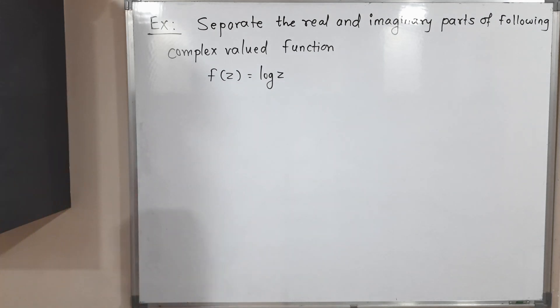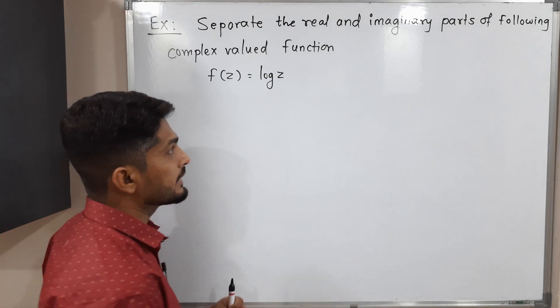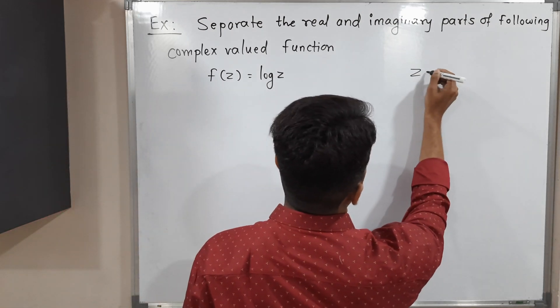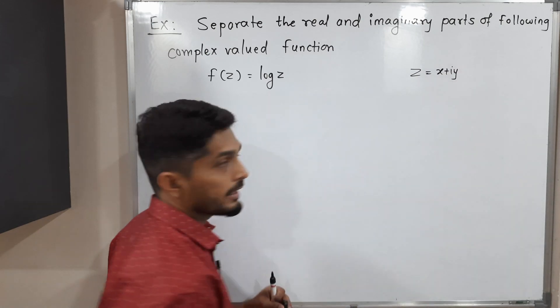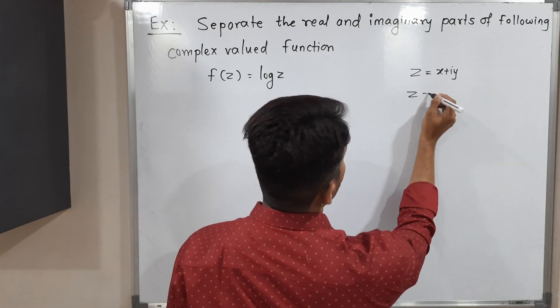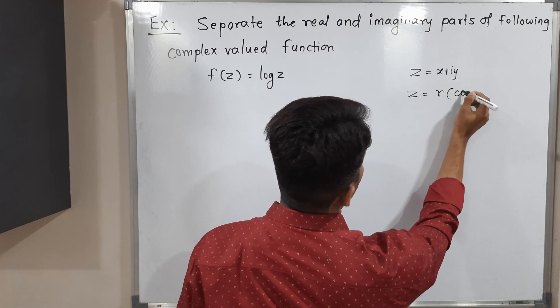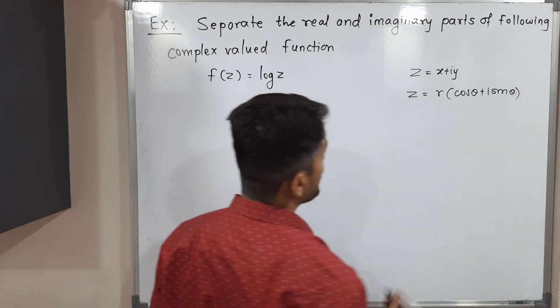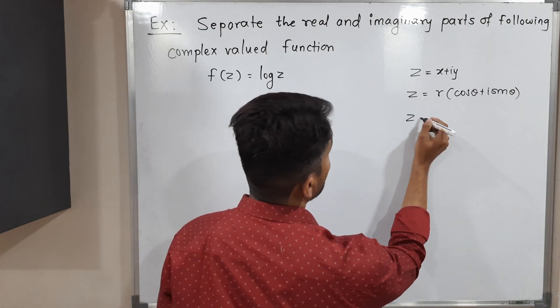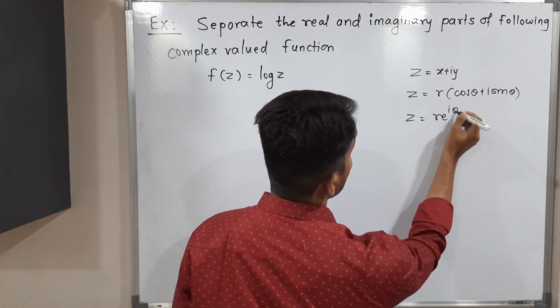The first important thing is that any complex number can be expressed in three different ways. z = x + iy, we call it Cartesian form. z = r(cos θ + i sin θ), we call it polar form. And z = re^(iθ), we call it exponential form.